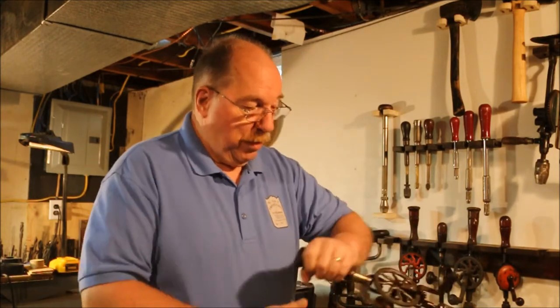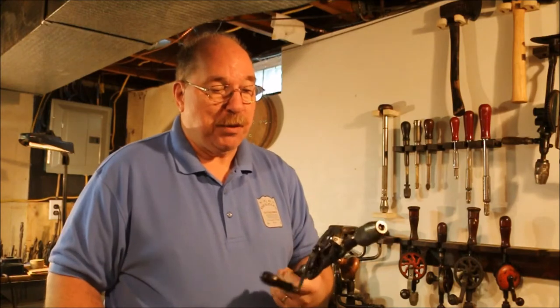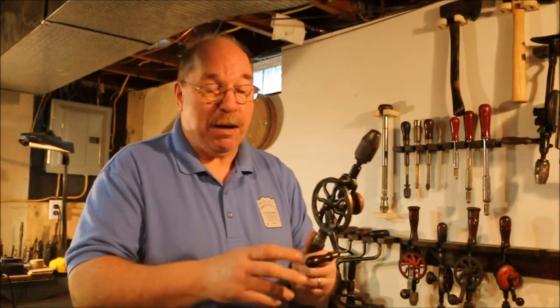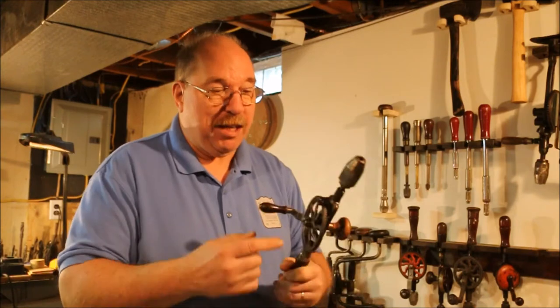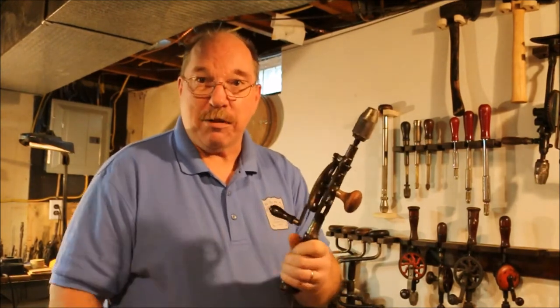Homestead engineer asked me a question about my Miller number two hand crank drill. Well, this one, which I call an egg beater, is a number two drill made by Miller Falls. And he was asking me about getting the little roller out. So let's try doing it and see just exactly what's involved.